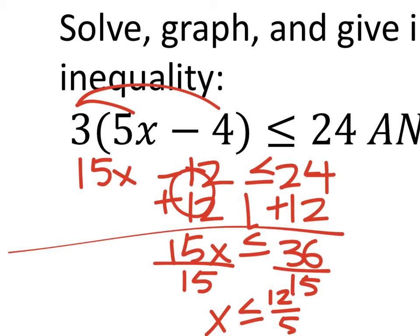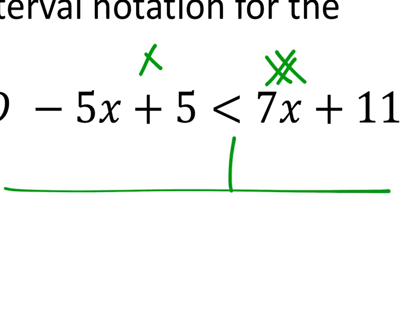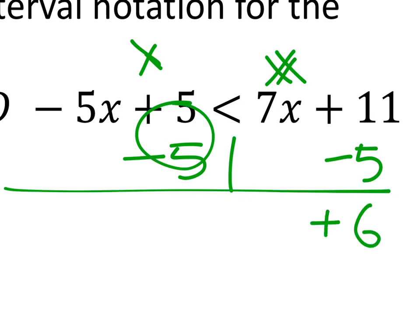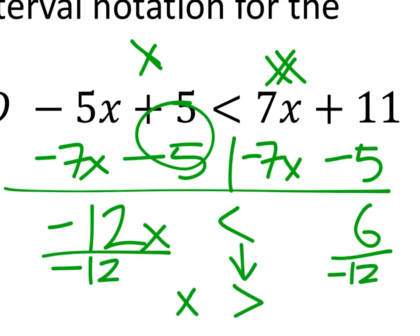When graphing by hand, fractions are manageable — though the homework may not require graphing them. For 12/5, I'll keep it as a fraction. For the green inequality, keeping x on the left: subtract five from both sides and subtract seven x, giving -5x - (-7x) = actually negative five x minus negative seven x gives negative 12x < 6. Divide both sides by negative 12 — this flips the inequality — so x > -1/2.